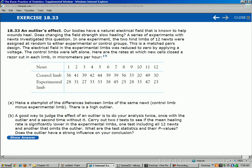Carry out two tests to see if the mean healing rate is significantly lower in the experimental limbs. One test including all 12 newts and the other that omits the outlier. What are the test statistics and their p-values and does the outlier have a strong influence on your conclusion?